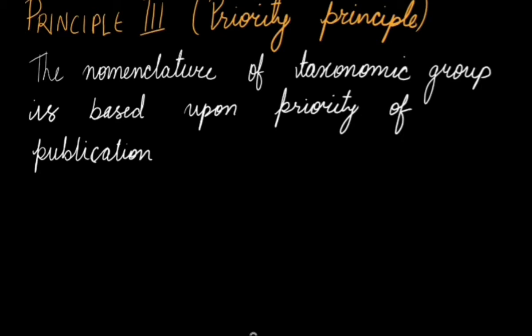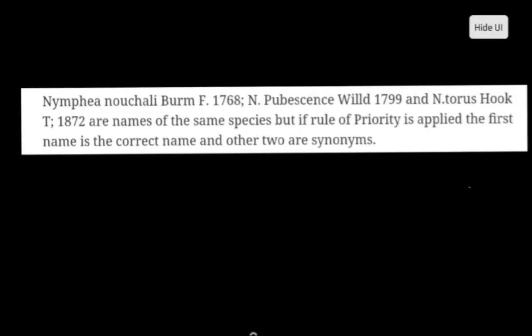Here is an example of Nymphaea. This name has been given in 1768, Nymphaea pubescens has been given in 1799, and Nymphaea lotus has been given by 1872. So if the principle of priority has to be applied, then obviously Nymphaea nouchali Burm.f. would be considered.